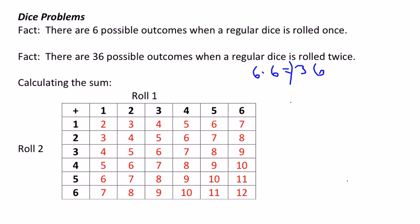You can look at all the outcomes in this chart. I've used this chart to calculate the sums, but you can use it in different ways — roll one is on top and roll two is on the side. You can fill them in as ordered pairs, like one-comma-one, or one-comma-two, and so on. I've used it here for the sums.